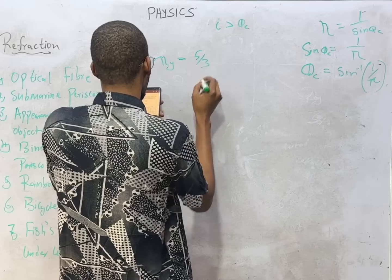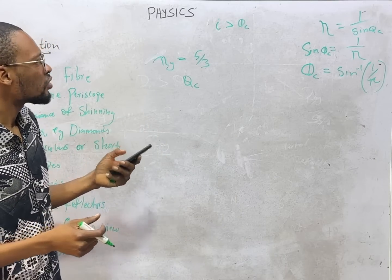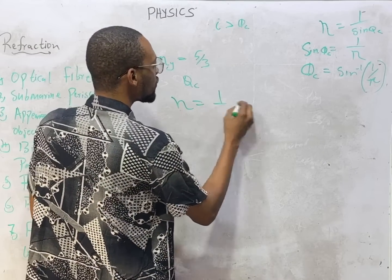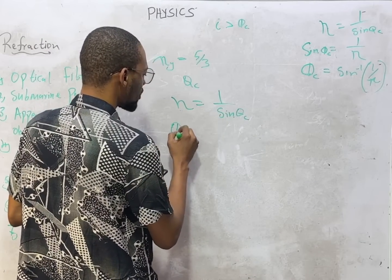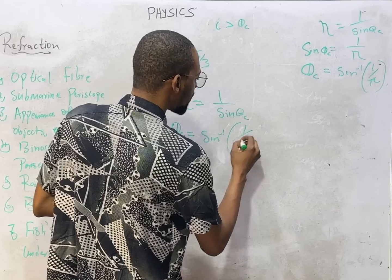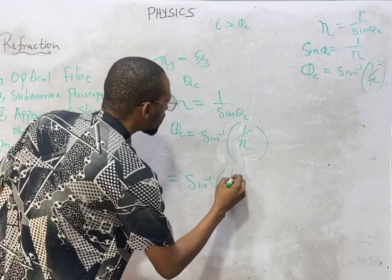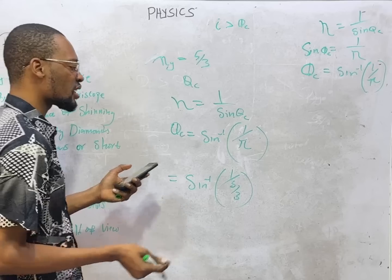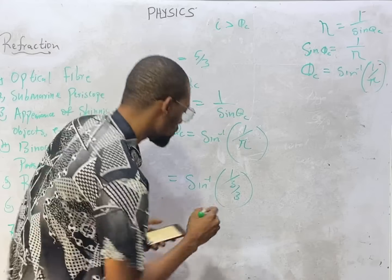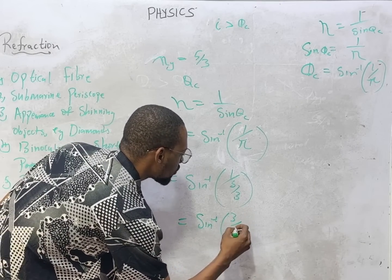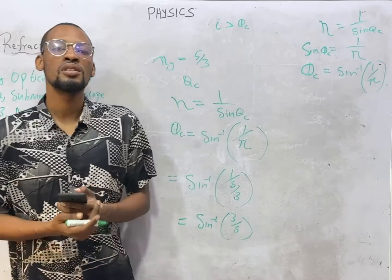Question two: calculate the critical angle for light traveling from glass to air. The refractive index of the glass is 5/3. We are asked to find the critical angle. The formula is: θc = sine inverse of 1 over the refractive index. So the critical angle is sine inverse of 1 over (5/3), which is sine inverse of 3/5. And sine inverse of 3/5 equals 36.9 degrees. So your critical angle is 36.9 degrees — option D is the correct option.